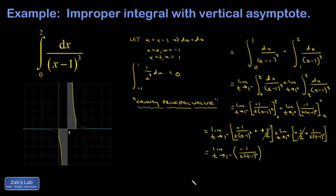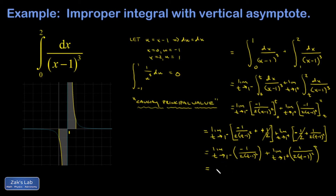As t approaches 1 from the left, the denominator (t minus 1) squared is always positive because it's squared, and we end up with division by zero — giving negative infinity. For the second limit, approaching from the right, we get the same situation but without the minus sign, giving positive infinity. At this point in introductory calculus, if either limit diverges to plus or minus infinity, we say the integral is divergent.